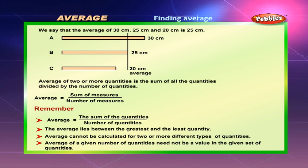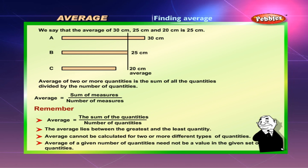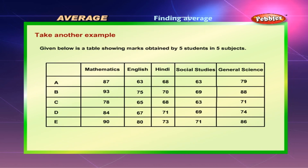The average of two or more quantities is the sum of all the quantities divided by the number of quantities. Remember: average is equal to the sum of the quantities divided by the number of quantities. The average lies between the greatest and the least quantity. Average cannot be calculated for two or more different types of quantities. Also, the average of a given set of quantities need not be a value in that set.